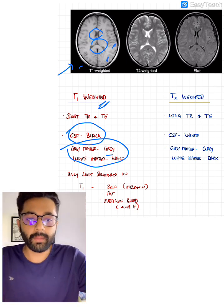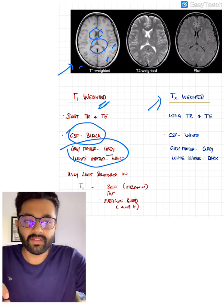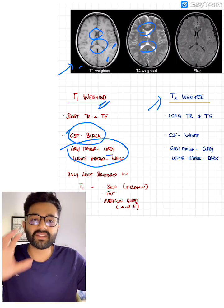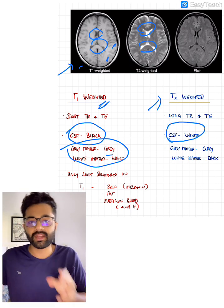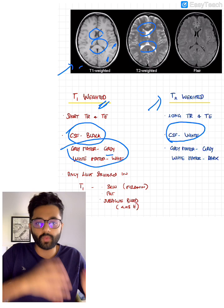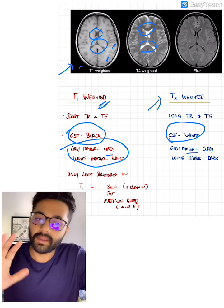Now coming to T2 weighted image, you can see here the CSF filled spaces or the CSF is white in color. So in the T2 weighted image, the CSF is white. So this is the easiest way to differentiate: CSF is black in T1 and CSF is white in T2.